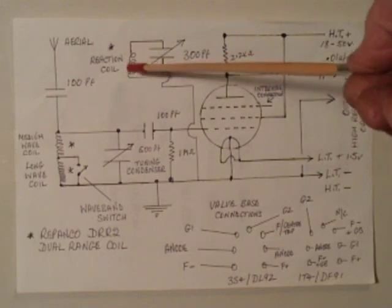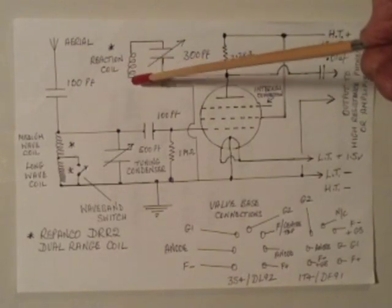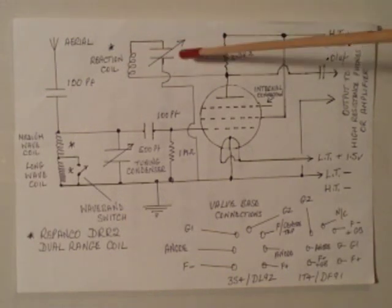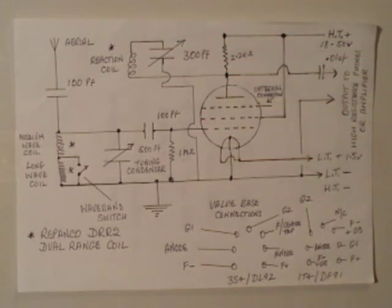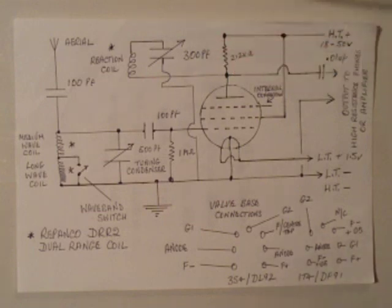Now this coil here is wound on and is part of the Ripanko DR2 coil. It's the reaction winding. One end of that is connected to the anode. The other end goes through a 300 puff variable capacitor to earth. Now the purpose of this is obviously if you've only got one valve, it does have a bit of a struggle to provide the selectivity and sensitivity that you need to produce a reasonable audio output. So that coil, what it actually does is produce a feedback within the valve. It feeds some of the output of the valve back into the input and sharpens the whole valve gain up to a very critical level which is set by this 300 puff capacitor.